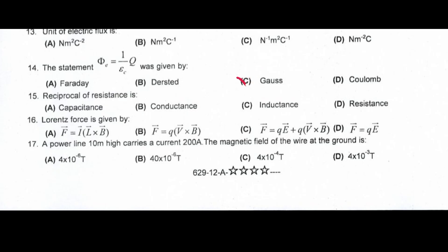Reciprocal of resistance is conductance. Lorentz force is given by correct option C. A power line 10m high carrying current 200A has magnetic field at the ground of 4 multiplied by 10 to the power minus 6 tesla.